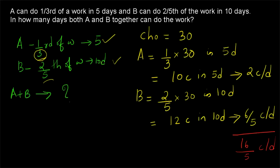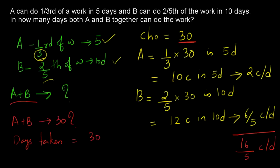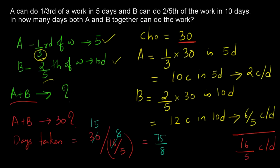The question asks how much time will A and B together take to complete the work. The total work is thirty chocolates. The days taken will be thirty divided by sixteen-by-five. Cancelling sixteen and thirty by two gives us fifteen and eight, resulting in seventy-five-by-eight days. Represented as a mixed fraction, that is nine and three-by-eight days. This is the time taken for A and B together to complete the work. Thank you for watching.